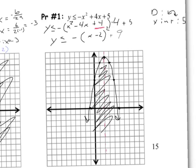That's all there is to it. The only thing that's really new here from the other parabolas we've been graphing is what does this symbol mean — is it a solid line or dotted line? And are we shading up or down? All right, let's go on to the next question.